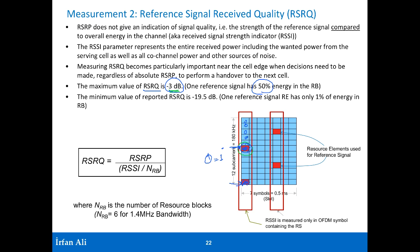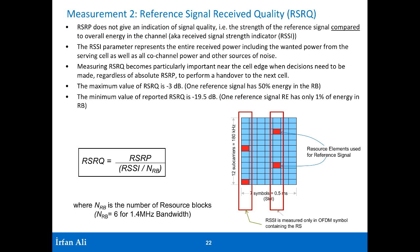There are at minimum two reference signals in a particular resource block, so the range goes from minus 3 dB down to a minimum value close to minus 20 dB. At minus 20 dB you are essentially saying that the energy received in the reference signal is only 1% of the total energy in the resource block, because minus 20 dB is 10 to the power of minus 2, which is 0.01 — that is 1%. Both RSRP and RSRQ get reported back to the base station and are used for handover decisions.